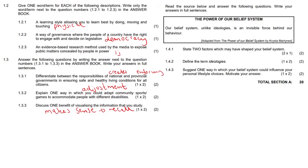The source is about the power of our belief system — unlike ideologies, it is an invisible force behind our behavior. Question 1.4.1: state two factors which may have shaped your belief system. Our earliest relationships with friends and family, and significant experiences we've had in our life, are two key factors.